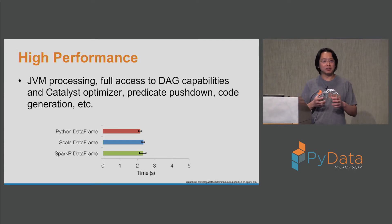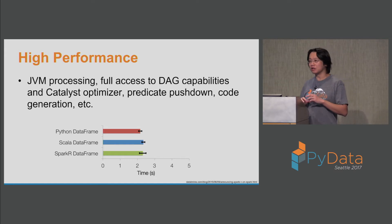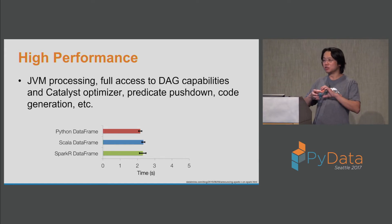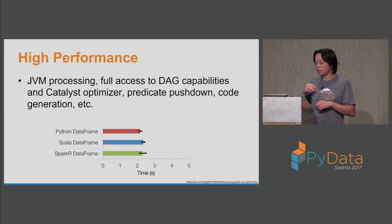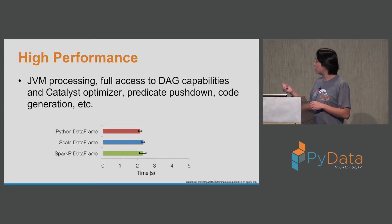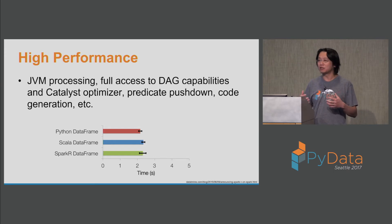An interesting thing about Python, R, and this architecture overall is that most of the work actually executes in the JVM itself. These wrapper classes operate in those languages, but the heavy lifting is done in the JVM. This means you can leverage all the optimizations happening in Spark — predicate pushdown, code generation, and more — with basically no performance penalty running different language bindings on top of Spark. This is a recurring theme: we want to do the heavy lifting in the JVM.